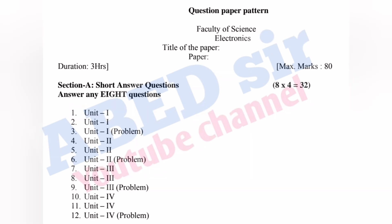This question paper has two parts: Part A and Part B. In Part A, short questions will be asked — three questions from each unit. Total 12 questions will be asked. Out of 12, you have to answer any eight and each one carries four marks. So eight fours are 32 marks you will get from Part A.